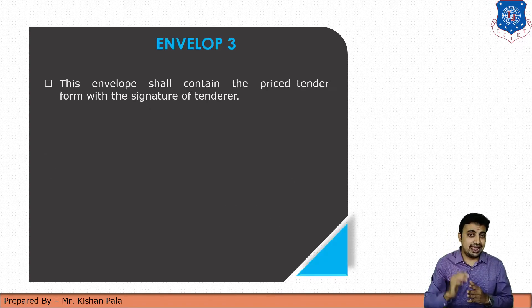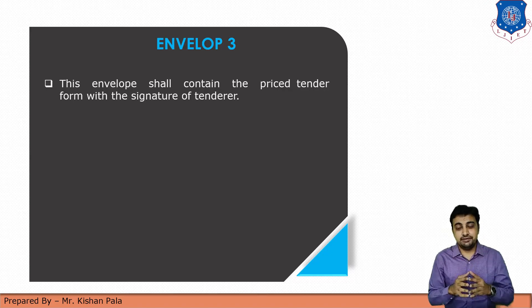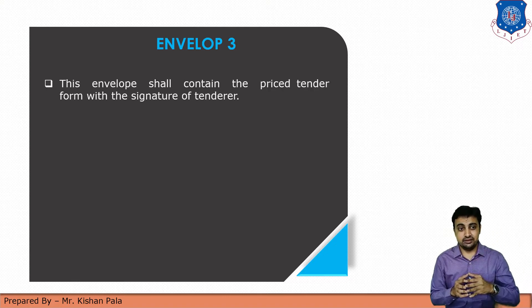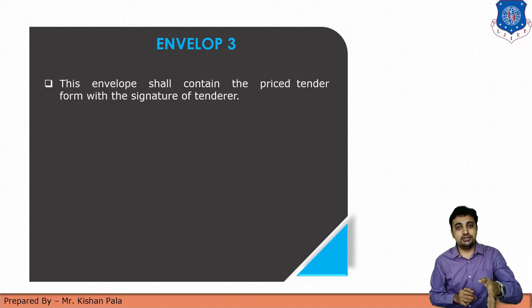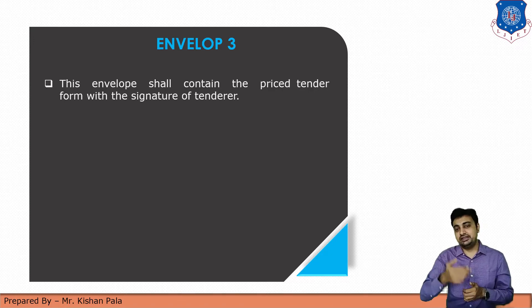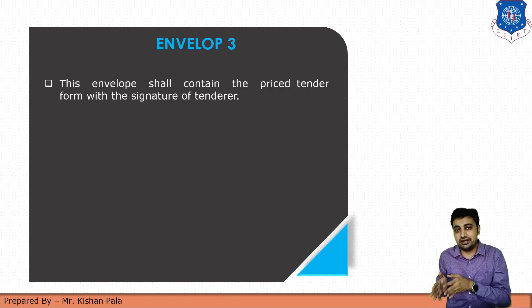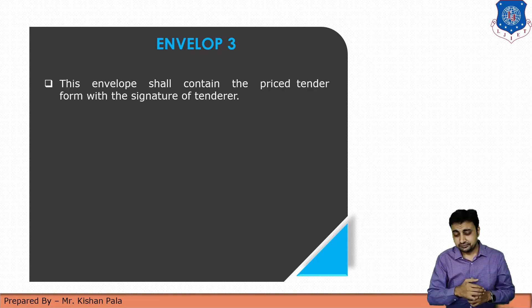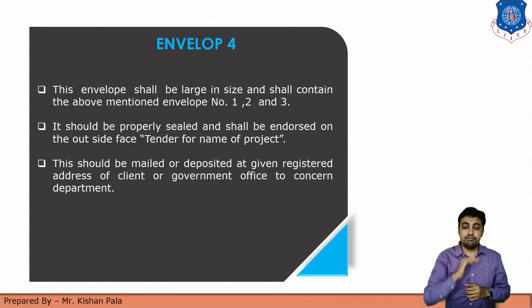Now let us discuss about envelope number 3. In this envelope, the contractor has to submit a price tender form with the signature of the tenderer. Based on the quantity of all activities and rate of the work, the contractor will calculate the particular price at which he wants to do that work.